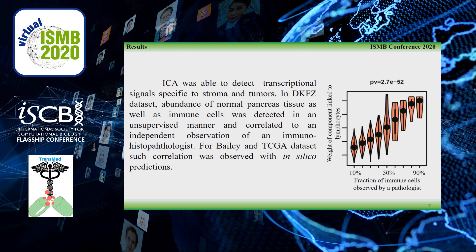ICA was able to detect transcriptional signals specific to stroma and tumors. In the KFZ dataset, abundance of normal pancreas tissue as well as immune cells was detected in an unsupervised manner and correlated to an independent observation of an immunohistopathologist. For Bailey and TCGA datasets, such correlations were observed within in silico purity predictions.